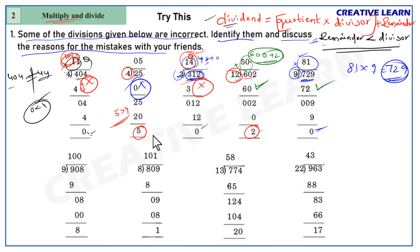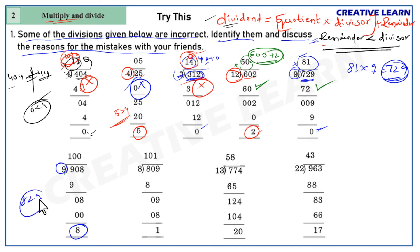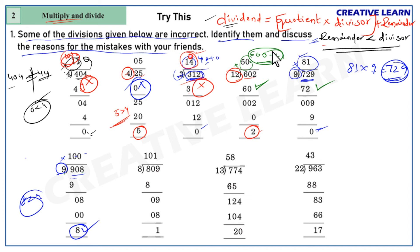Next, 908 divided by 9. Second rule: remainder 8 < divisor 9, satisfied. First rule: 100 × 9 = 900, plus remainder 8 = 908, which equals the dividend. Both rules are satisfied, so this is correct.